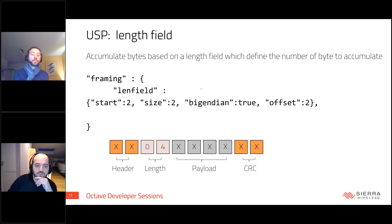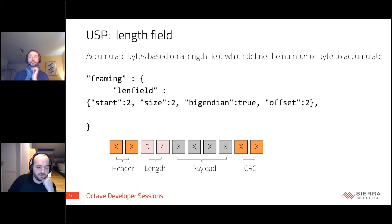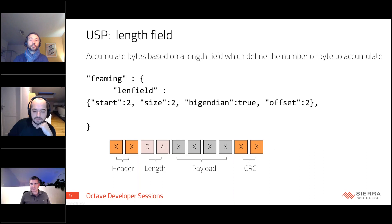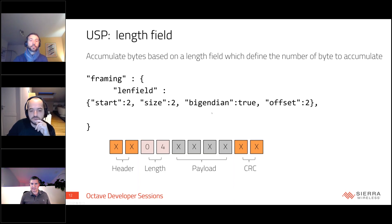The third framing strategy is 'length field' — for protocols without a delimiter or fixed size, but where a length value is encoded somewhere in the payload. For example, a protocol with two bytes of header, a length field, four bytes of payload, and a CRC footer. You configure USP with the length field framing strategy: it starts at byte 2, the size is 2 bytes, big-endian encoded, with an offset of 2 — meaning accumulate four payload bytes plus two for the CRC.